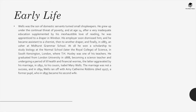His early life: Wells was the son of domestic servants turned small shopkeepers and grew up under the continual threat of poverty. At age 14, after a very inadequate education supplemented by his inexhaustible love of reading, he was apprenticed to a draper in Windsor. His employer soon dismissed him and he became assistant to a chemist, then to another draper, and finally in 1883 an usher at Midhurst Grammar School. At 18, he won a scholarship to study biology at the Normal School — later Royal College of Science — in South Kensington, London, where T.H. Huxley was one of his teachers. He graduated from London University in 1888, becoming a science teacher. He married his cousin Isabel Mary Wells in 1891, but the marriage was not a success, and in 1894 Wells ran off with Amy Catherine Robbins, a former pupil who in 1895 became his second wife.